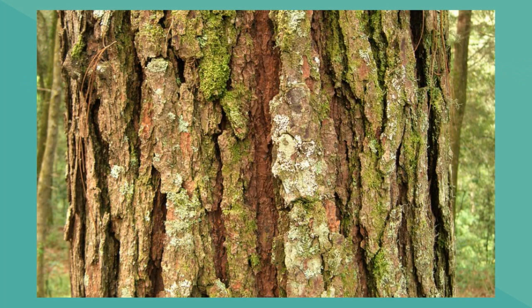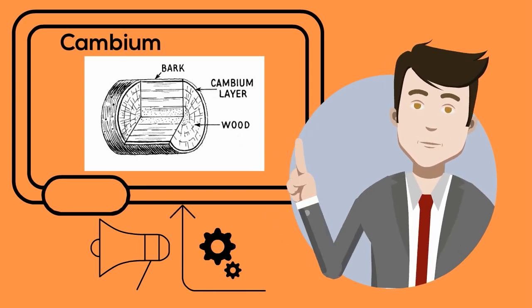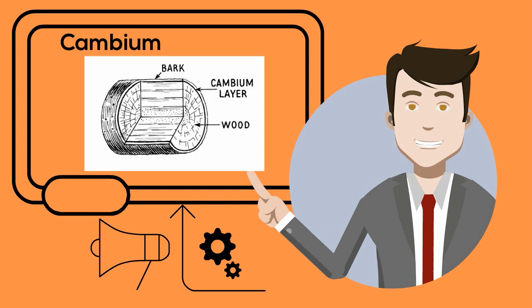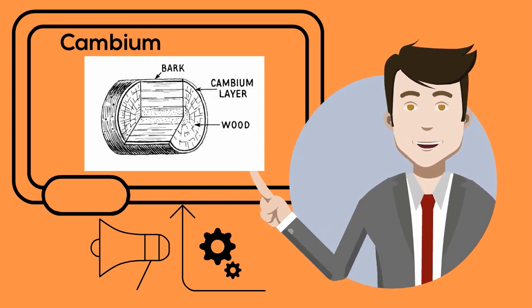In woody stems you have an outer layer called bark. Just inside the phloem is a layer of cells called the cambium. The cambium divide to produce new phloem and xylem.